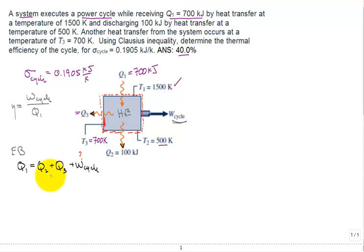The work of the cycle is also out. We do know Q2 and Q1, but we don't know Q3. We have one equation with two unknowns, Q3 and W_cycle. You can work all day and all night, and you will not be able to solve with one equation, two unknowns. So we need another equation.